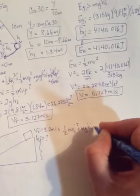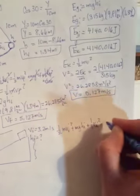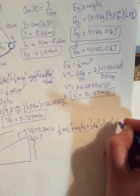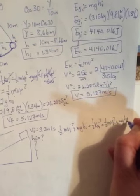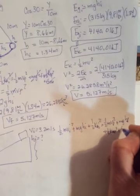plus mgh initial plus 1/2 kx initial squared equals 1/2 mv final squared plus mgh final. How come I always run out of room? Plus 1/2 kx final squared plus e lost.